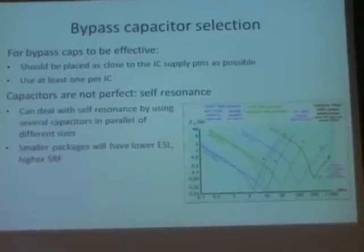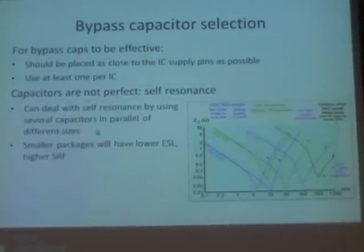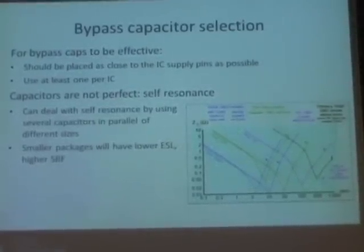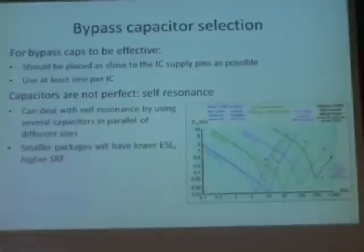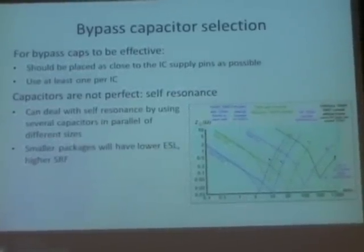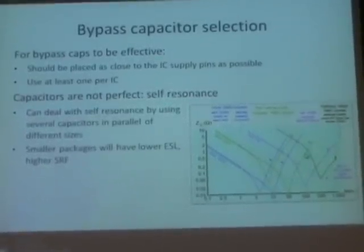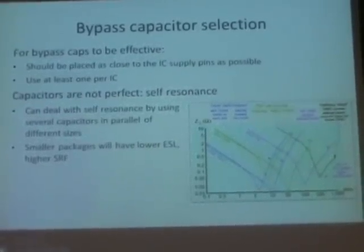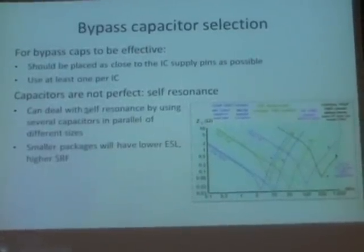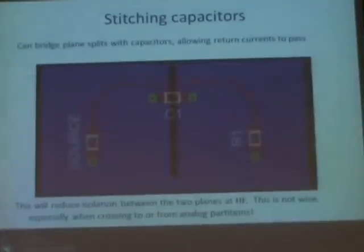If we want broadband low impedance, we have to combine several capacitors of different values and different packages. Smaller capacitor packages, like 0402 SMD, have lower self-inductance and higher self-resonant frequency. You should have a mix of tiny low-capacitance capacitors and larger ones with lower self-resonant frequencies to get a good broadband balance.